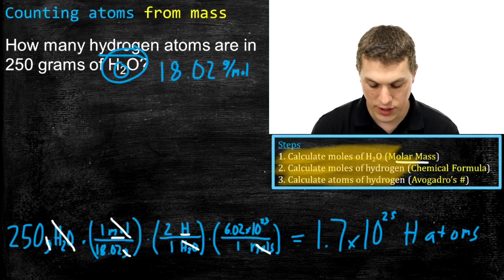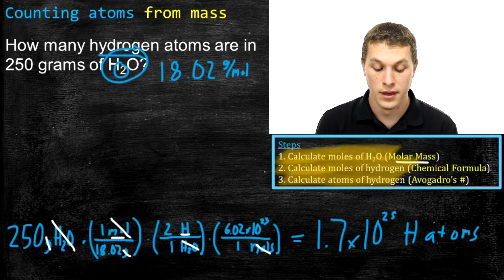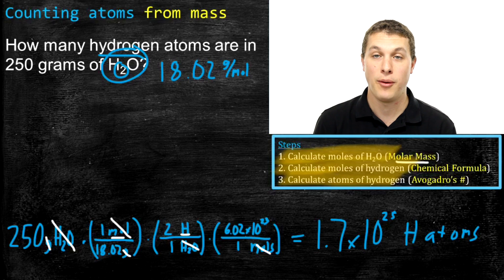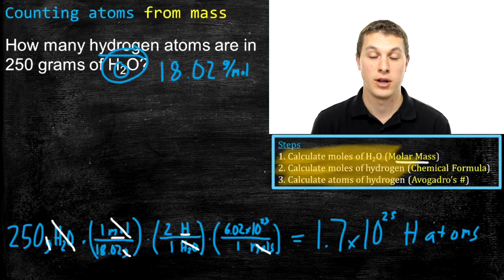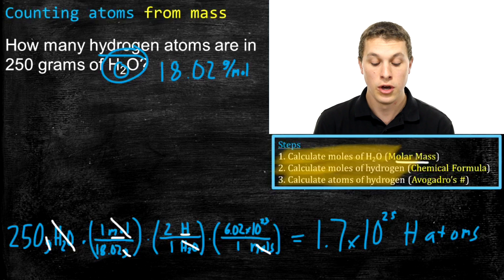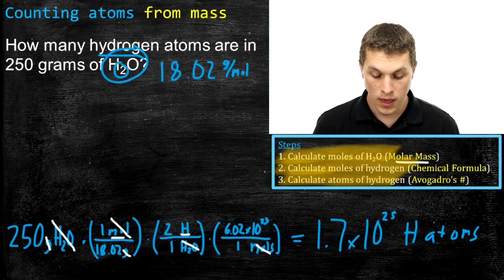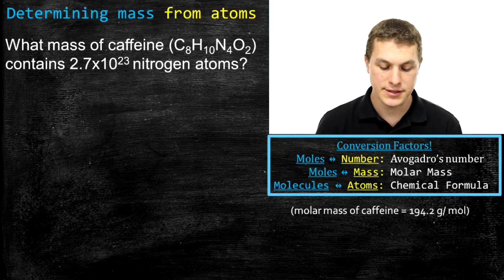Let's connect this back to our question: how many hydrogen atoms are in 250 grams of water — basically a cup of water? We calculated that 1.7 × 10²⁵ hydrogen atoms — each with one proton and one electron — are in that cup. Always connect your calculations to the real-world context. Let's do one more example.